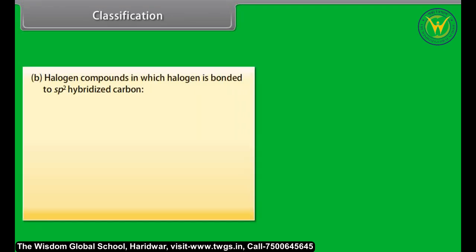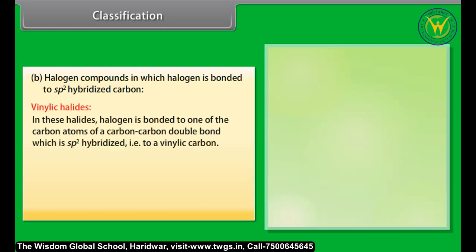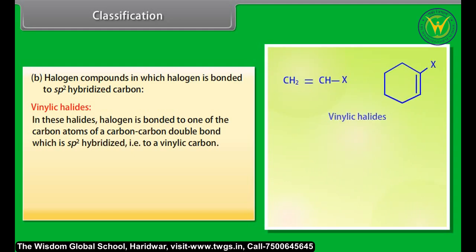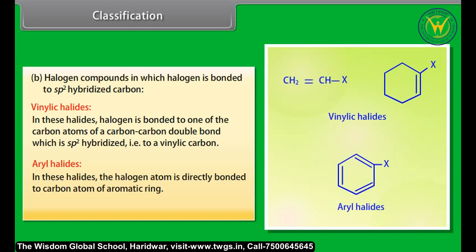In halogen compounds where the halogen is bonded to an sp2 hybridized carbon, vinylic halides have halogen bonded to one of the carbons of a C=C double bond. In aryl halides, the halogen atom is directly bonded to a carbon atom of an aromatic ring, for example halobenzene.